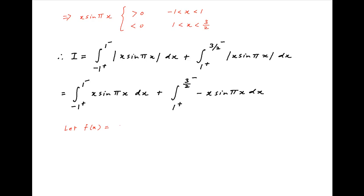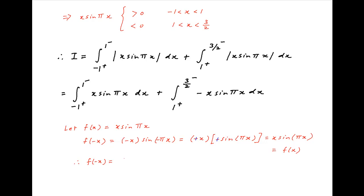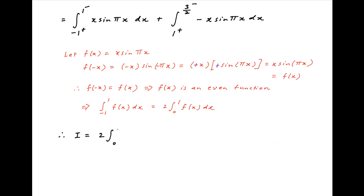Now let f(x) = x·sin(πx). Then f(-x) = (-x)·sin(-πx). Since sin(-πx) = -sin(πx), we get f(-x) = (-x)·(-sin(πx)) = x·sin(πx) = f(x). Therefore f(-x) = f(x), which means f(x) is an even function. Using properties of definite integrals, the integral from -1 to 1 of f(x) dx equals 2 times the integral from 0 to 1 of f(x) dx.